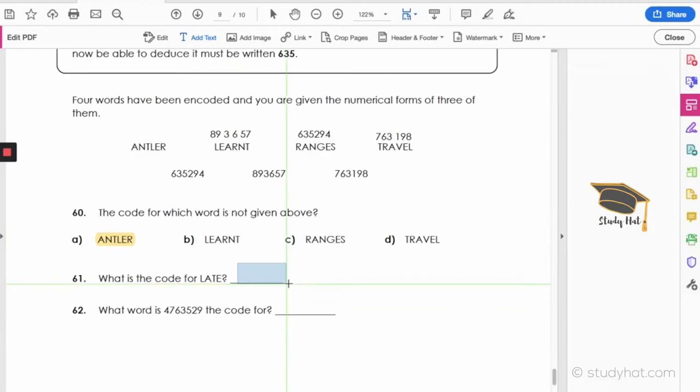Now what is the code for LATE? So we know that from LEARNT and TRAVEL that L is 8. We know that A is a 3. We know that T is 7. And we know that E is 9. So the code for LATE is 8, 3, 7, 9.